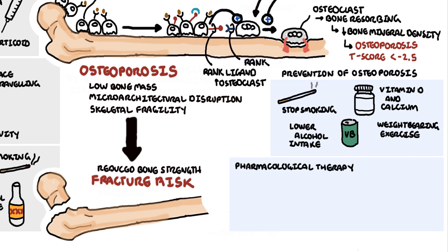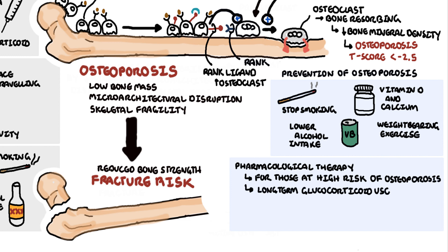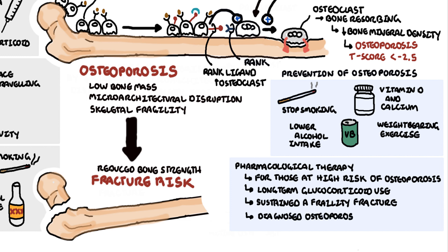There are medications available to prevent and to treat osteoporosis. Medications to prevent osteoporosis are only for those at high risk, including those taking high dose steroids for a long duration. If someone has a fragility fracture, they are usually started on medications for osteoporosis even if they haven't met the diagnosis based on the T-score, or if they are diagnosed with osteoporosis with a T-score less than negative 2.5.